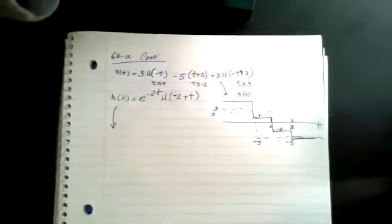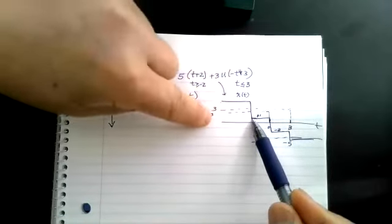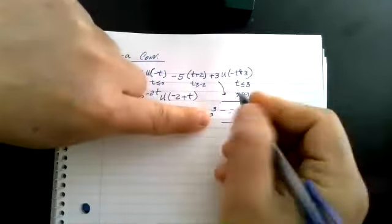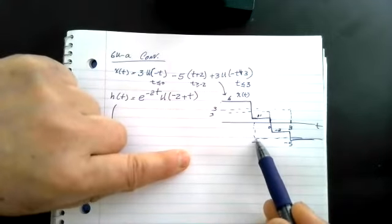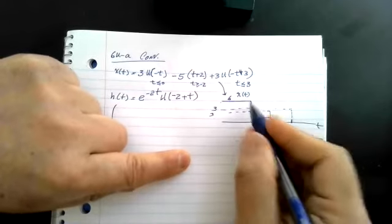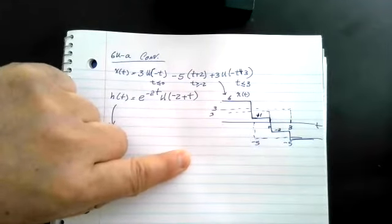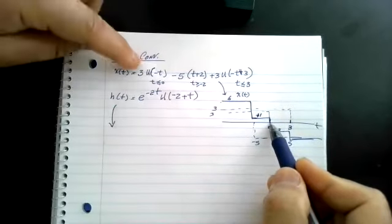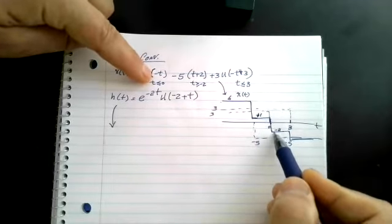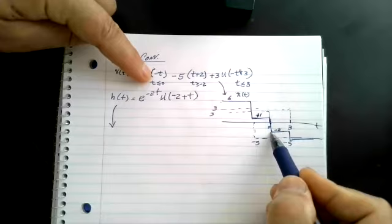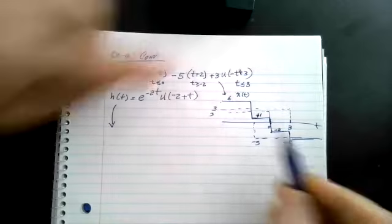So at the first change point — T equals minus two — I have three plus three which is six. At that point I add a minus five, so I drop to one. At zero I lose one of the threes, dropping to minus two. At T equals three I lose the last three and fall down to minus five. That's X(t).